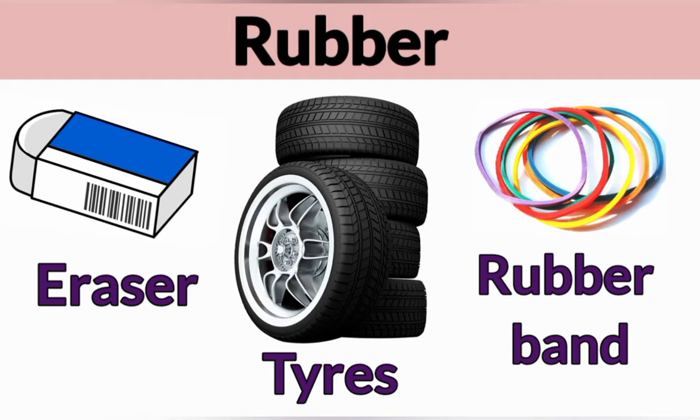Rubber: Plants also give us rubber which is used to make tires, tubes, erasers and rubber bands.